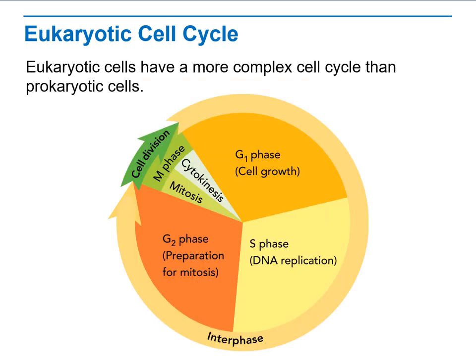In eukaryotic cells, the cells spend 90% of their life in interphase, which is the phase of getting ready to divide. The cells go through three phases: G1, which is cell growth; then the S phase, where DNA replication occurs; and finally the G2 phase, which is preparation for mitosis — checking that everything is ready before the division of the nucleus. After that comes the division of the cytoplasm, called cytokinesis.